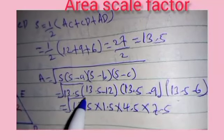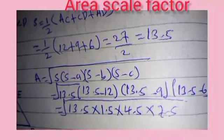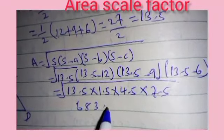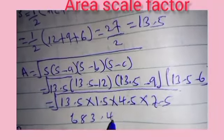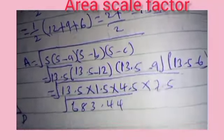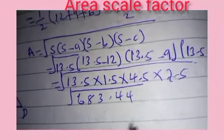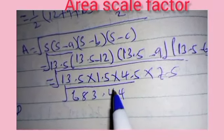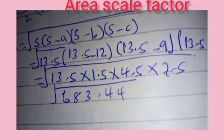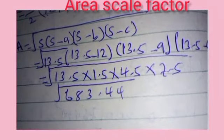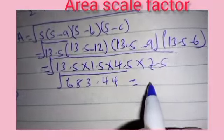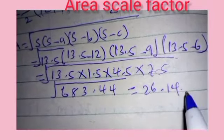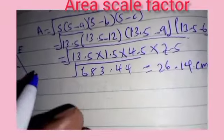When you multiply all of these together you get 683.44. Taking the square root of 683.44 gives you 26.14 square centimeters. So that is the area of that big triangle.